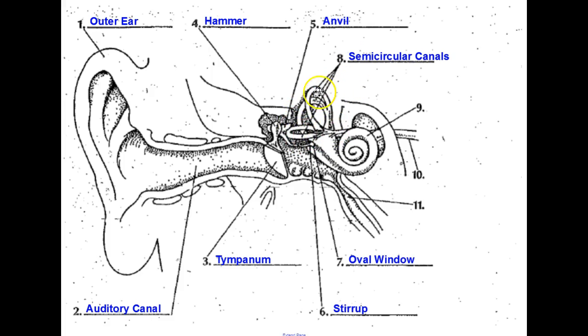These are the semicircular canals in the ear. The snail looking structure is the cochlea. Number 10 is the auditory nerve. Number 11 is the eustachian tube. Remember that your ear really has two functions. It helps you hear sound, but it also is responsible for balance.